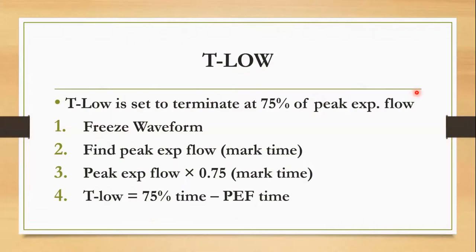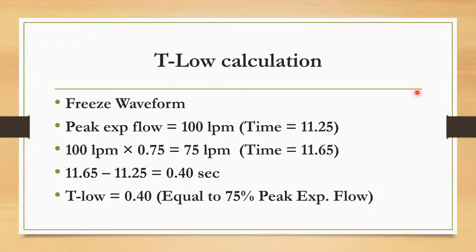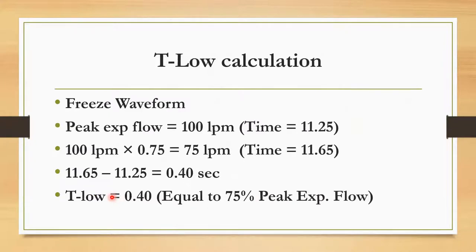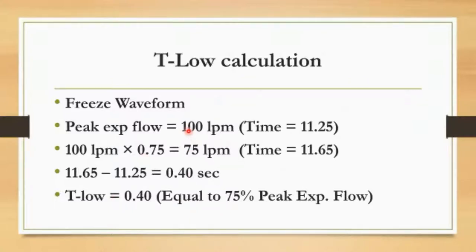The T-low is set to terminate at 75% of peak expiratory flow. Freeze the waveform, find the peak expiratory flow, mark the timestamp, multiply by 0.75, look at that timestamp, and take the difference — that's your T-low. Using 100 L/min as an example: find peak, calculate 75 L/min, identify the timestamp, and the time difference is your T-low setting.